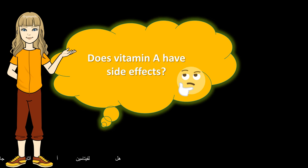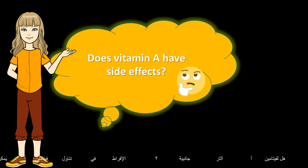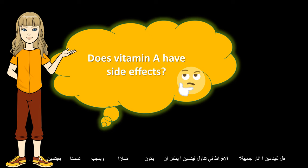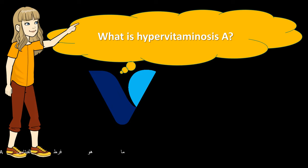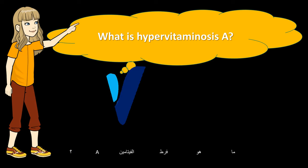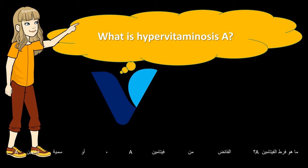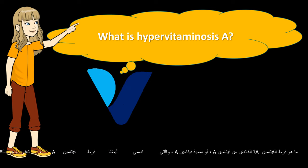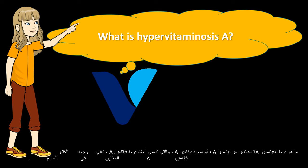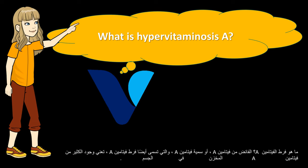Does vitamin A have side effects? Too much vitamin A can be harmful and cause vitamin A toxicity. What is hypervitaminosis A? Vitamin A excess, or vitamin A toxicity, also called hypervitaminosis A, means having too much vitamin A stored in the body.